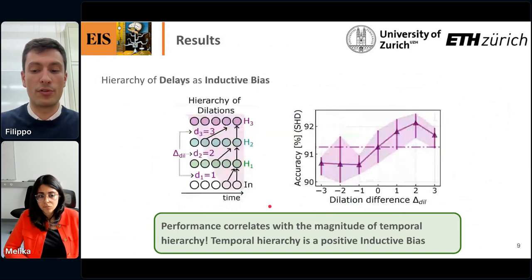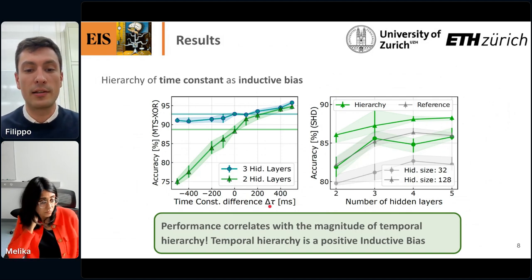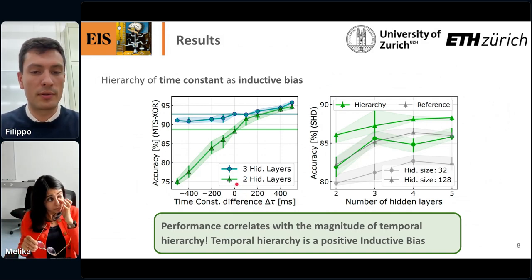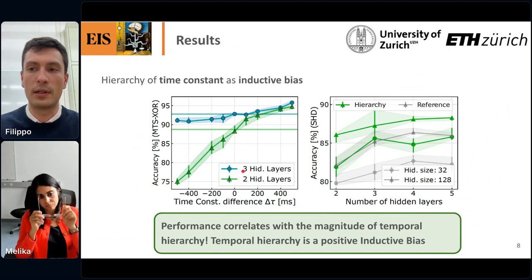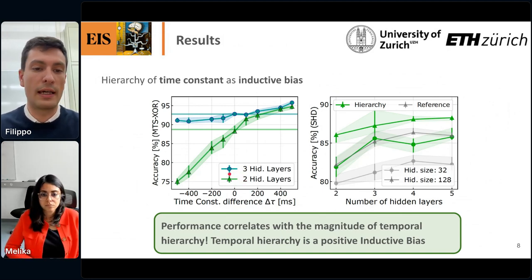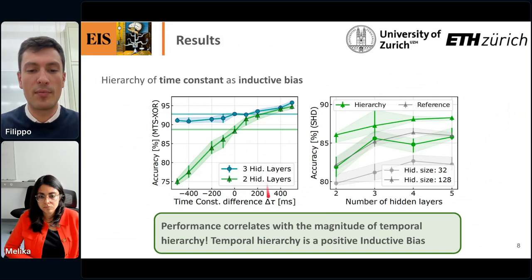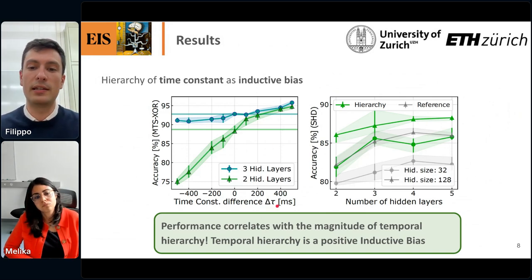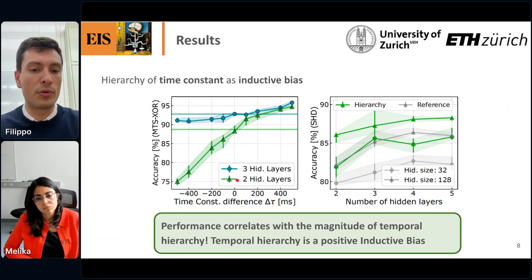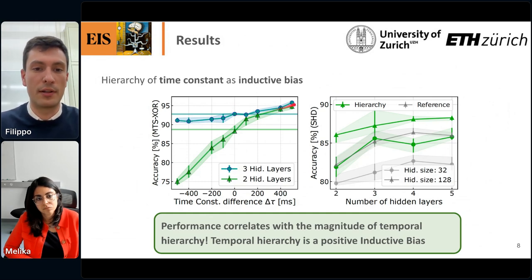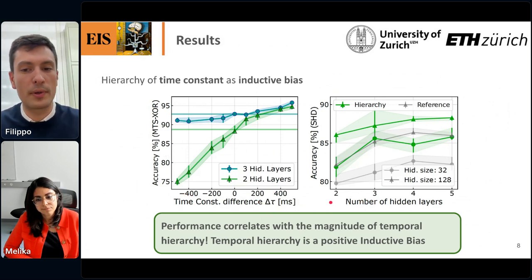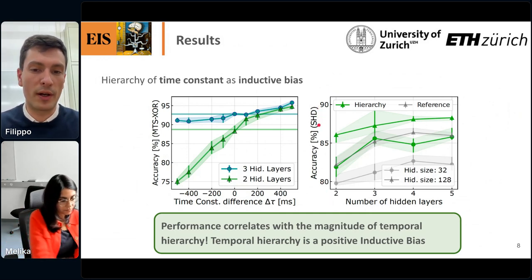The parameter delta-tau controls the spread of the time constants in the different hidden layers. I'm dealing with networks with either two or three hidden layers, solving the MTS-XOR task. You can see that performance correlates with delta-tau, meaning the initialization of temporal hierarchy actually correlates with performance. Going from two to three hidden layers degrades the amount of correlation somewhat, but there's still some correlation between accuracy and delta-tau.